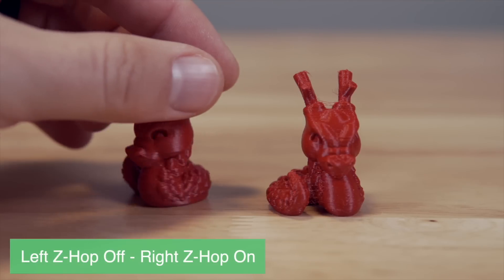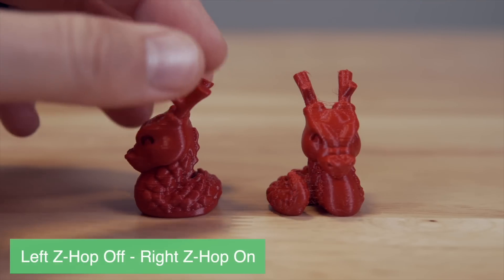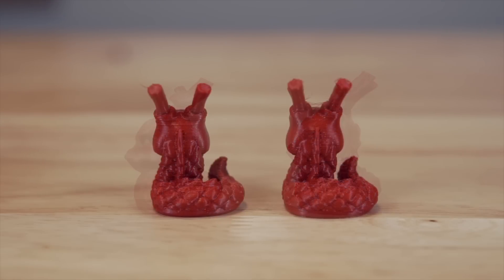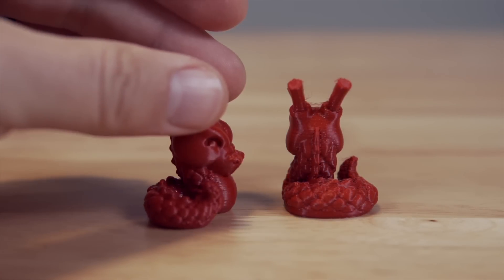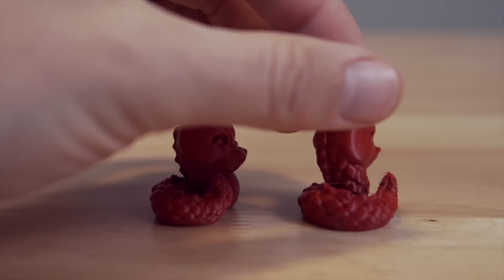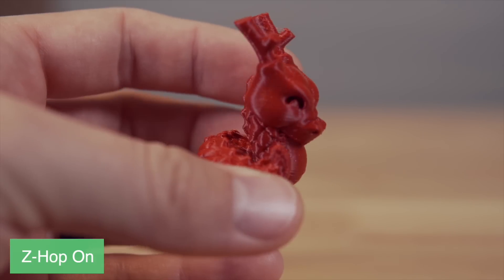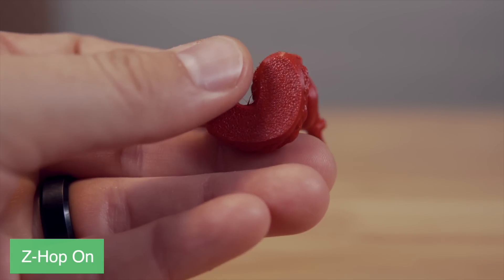I also printed out two CaliDragon models with this filament. I used the exact same slicer settings, except one of them had Z-hop enabled and one of them had Z-hop disabled. Ironically, I actually think that the print with Z-hop enabled turned out better. It does have a bit more stringiness, but for some reason, the layer consistency seems just a bit better on that print.